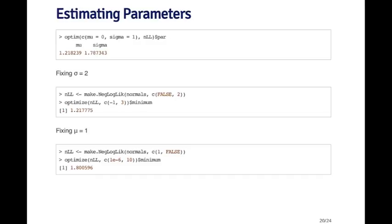I can also fix mu to be equal to one and try to optimize over sigma. To do that, I have to construct another function for optimization and call optimize on that, and here I get my estimate of sigma to be about 1.8.